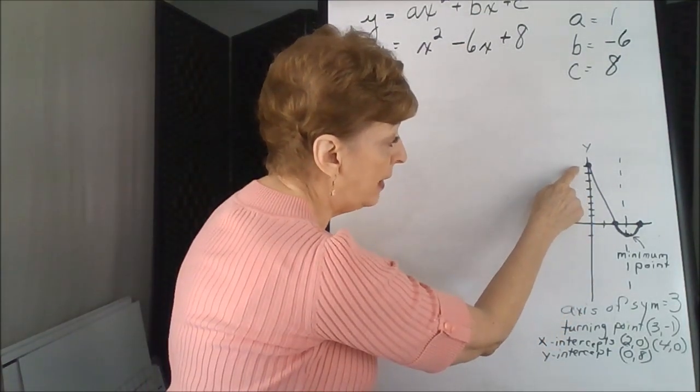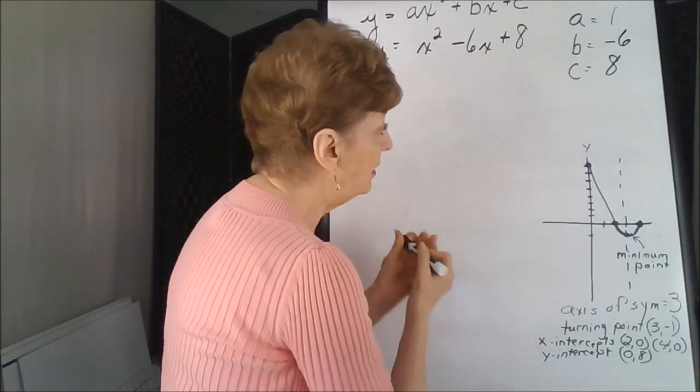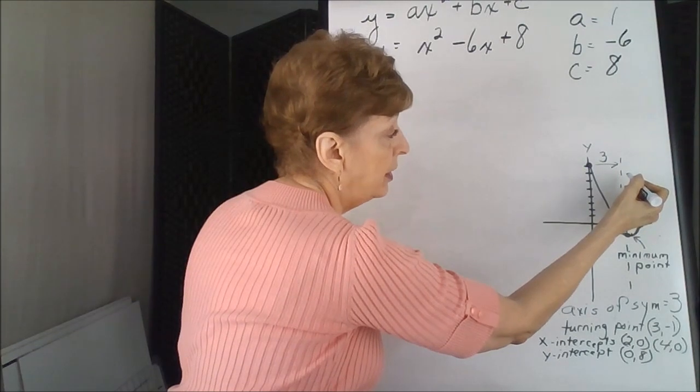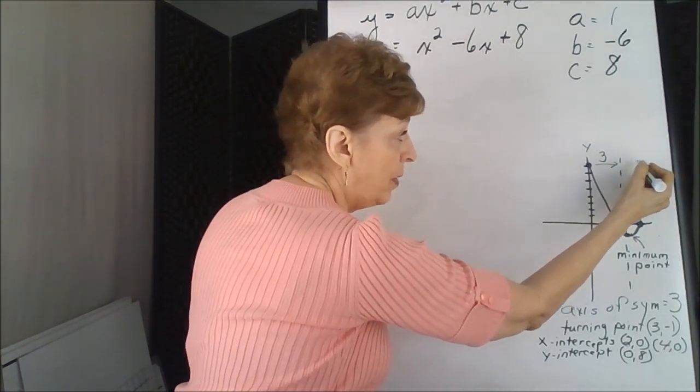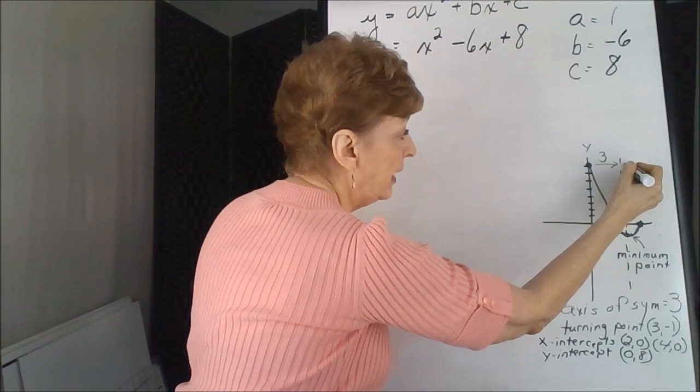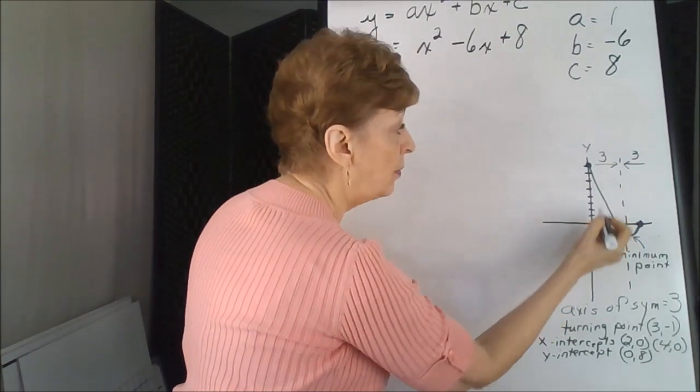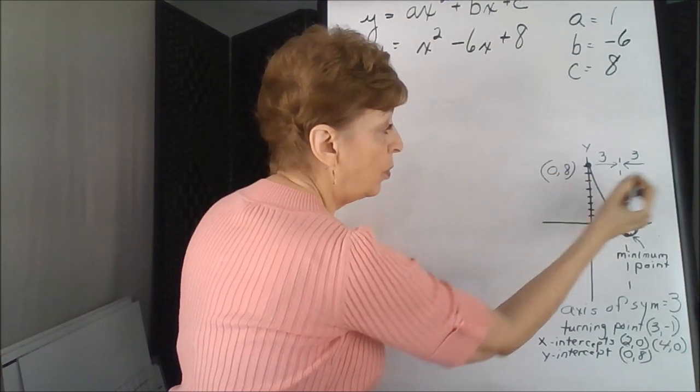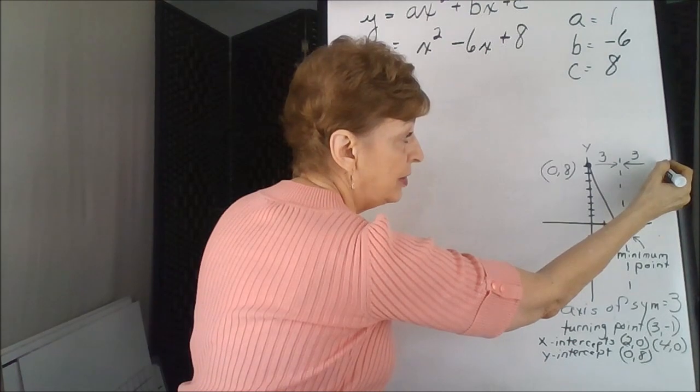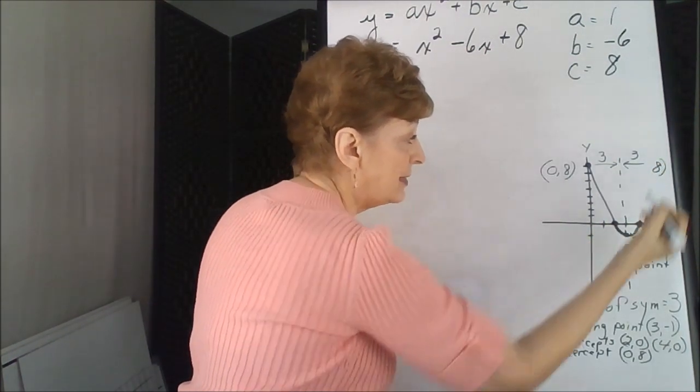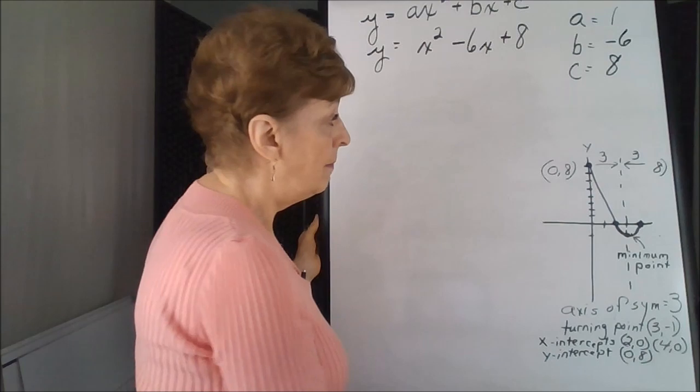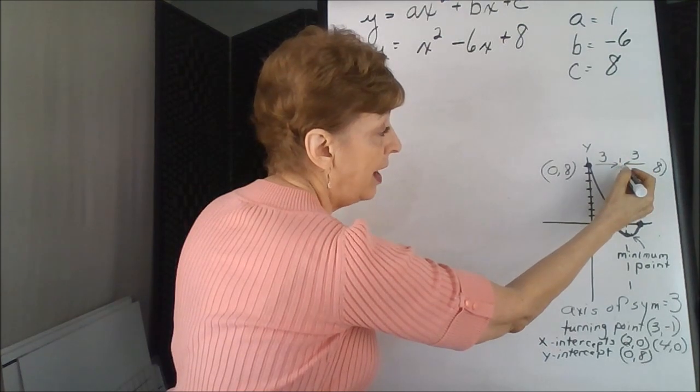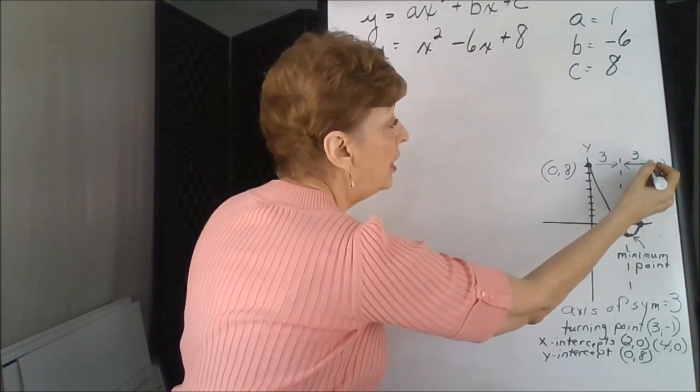So this particular point is one, two, three, three spaces from the axis of symmetry, which means that the reflected point also has to be three spaces out. Well, this point is at zero, eight. So we know that the y-value of the ordered pair that reflects it is also an eight. And we also know that if you go three steps to the dotted line and three steps more, you would need a six.